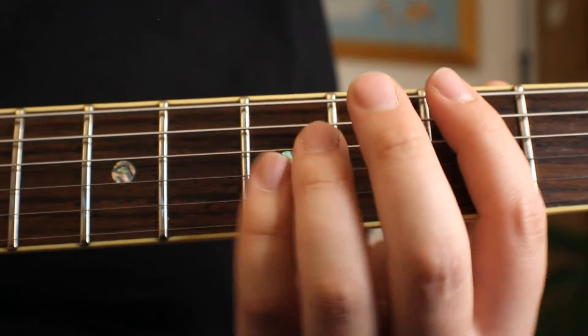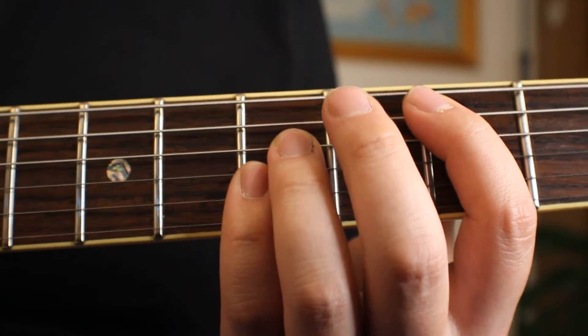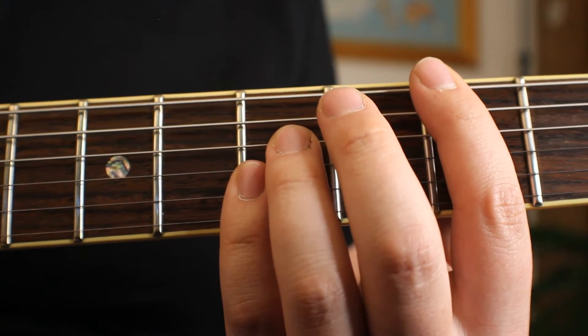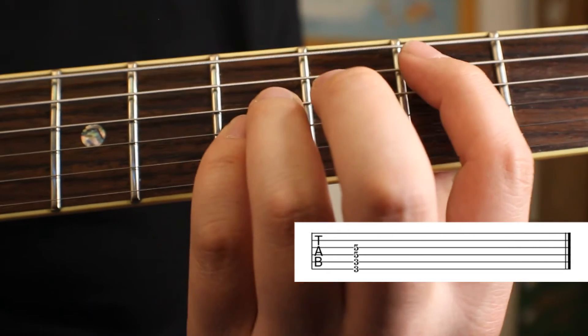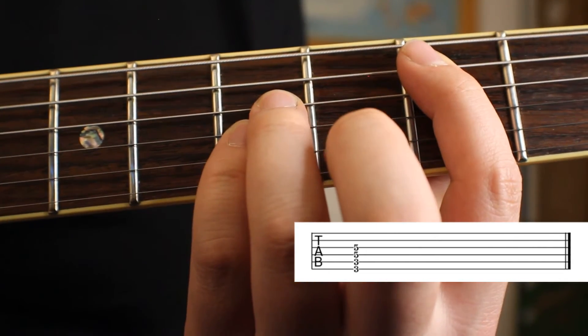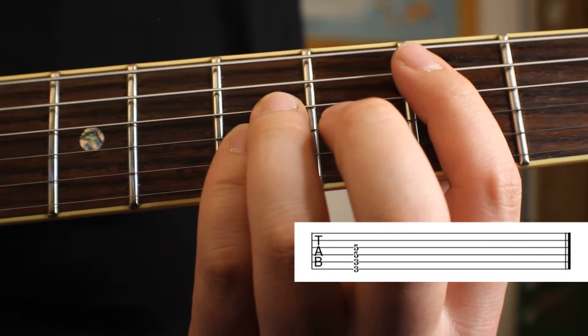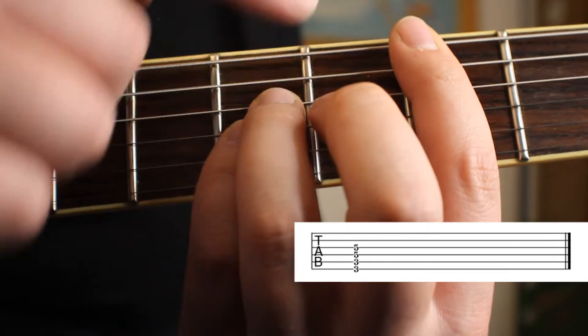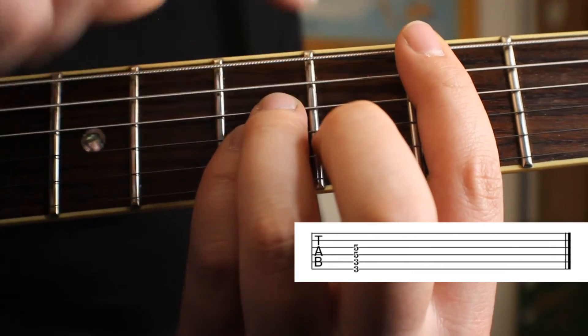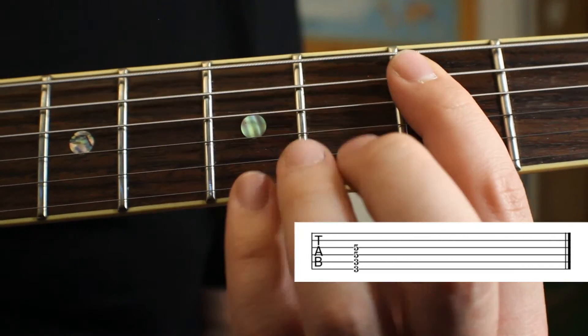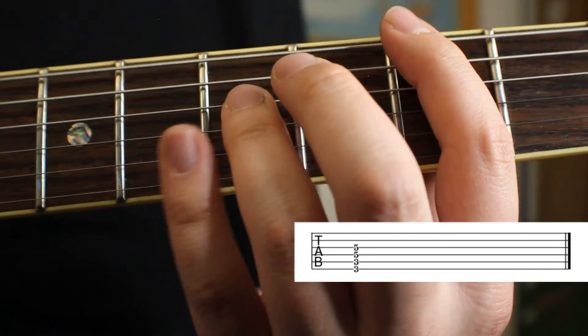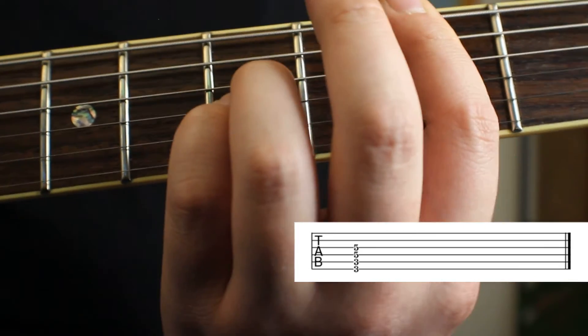This next one involves moving your hand up the strings a little bit because you need access to the fifth that's below your root note. We're playing that same position, but we're going to drop the pointer finger and bar over the E string and the A string. So you're playing your fifth, which is G, then your root, which is C, then another fifth G and another root C.